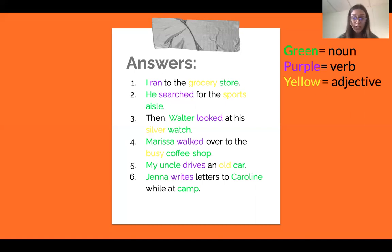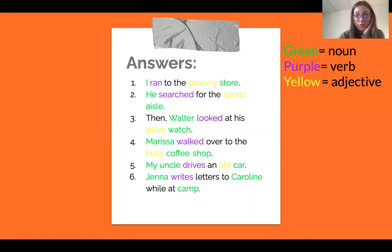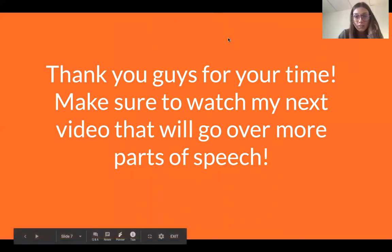Six: Jenna writes letters to Caroline while at camp. 'Jenna' is a noun because it's a person. 'Writes' is an action, so it's a verb. 'Caroline' is another noun because she's another person. And 'camp' is a noun because it's a place. So if you had any trouble with those, do this activity over. I hope that helped — thank you guys for watching, and make sure to watch part two that will go over some more parts of speech. Bye, guys!